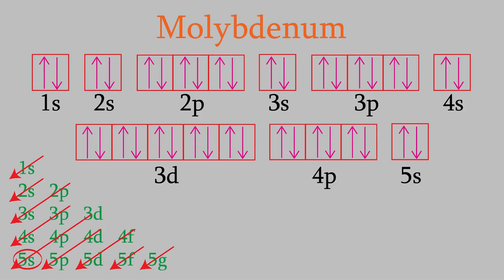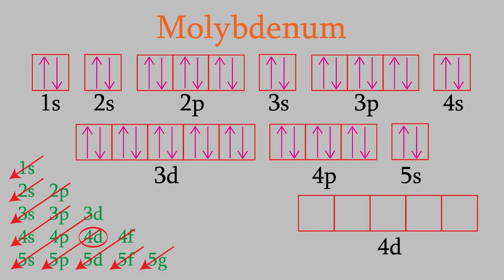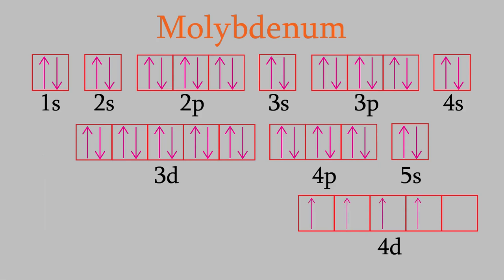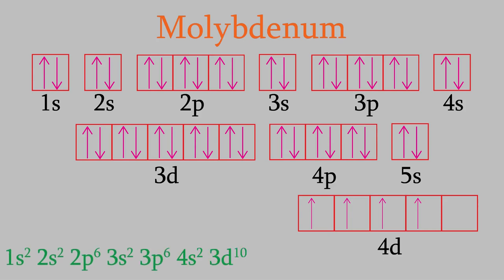If you count up the electrons drawn so far you'll see we have 38 of them. Molybdenum has 42 electrons, so we still have four more to go. The triangle diagram tells us the next set of orbitals should be 4d. As with 3d, there are five possible values of m, so there are five different 4d orbitals. But we have only four electrons left. Hund's rule tells us that each orbital of the same type gets one electron before they start to pair up, so we put each of our four electrons into a different box. The electron configuration is: 1s², 2s², 2p⁶, 3s², 3p⁶, 4s², 3d¹⁰, 4p⁶, 5s², 4d⁴.